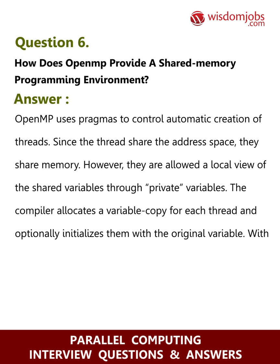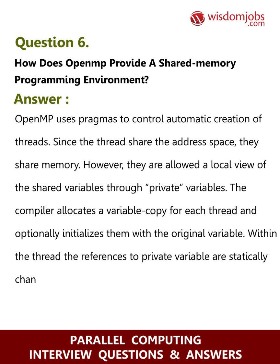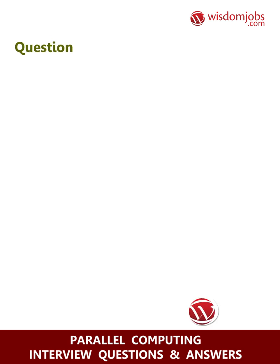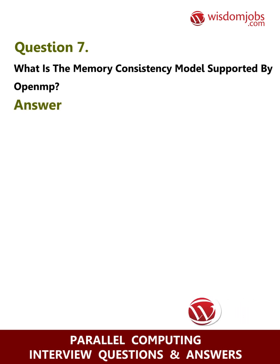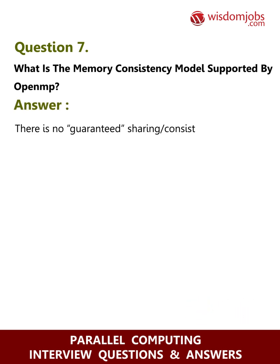Within the thread, the references to private variables are statically changed to the new variables. Question 7: What is the memory consistency model supported by OpenMP? Answer: There is no guaranteed sharing consistency of shared variables until a flush is called.